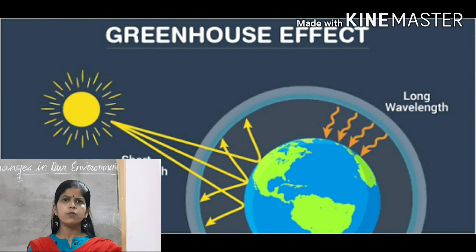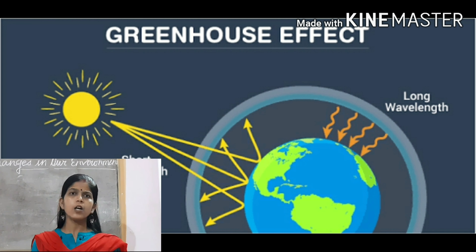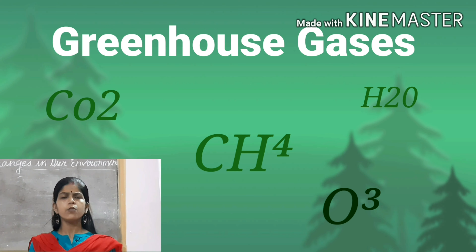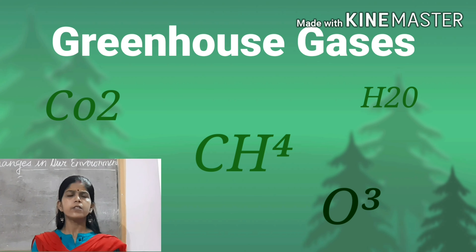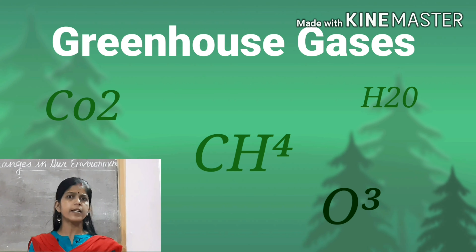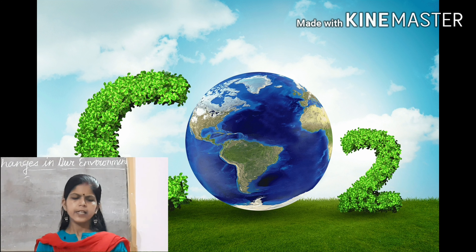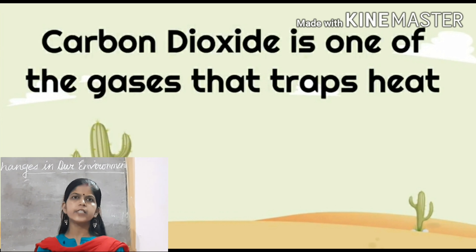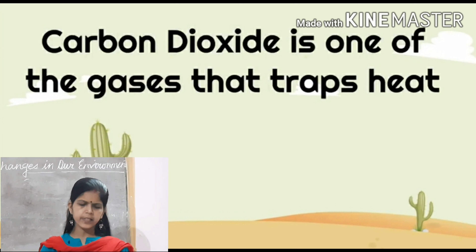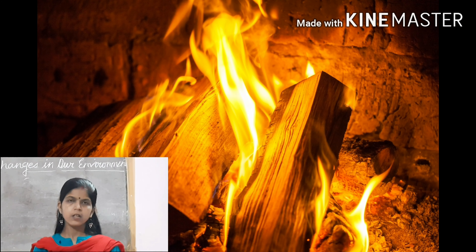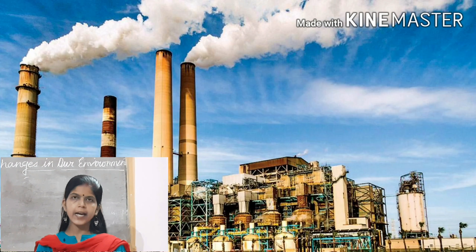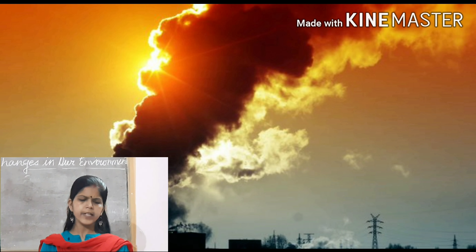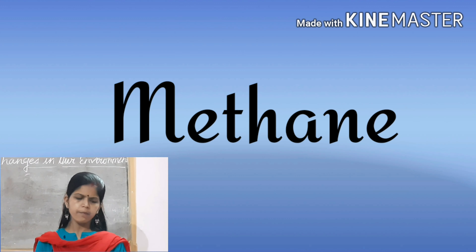Now you have learned about the greenhouse effect and greenhouse gases. I am going to explain some of the greenhouse gases. Carbon dioxide in the air is increasing at an alarming rate. It is due to various human activities such as deforestation, burning of fossil fuels, and excessive use of fossil fuels. It is one of the major contributors to global warming.